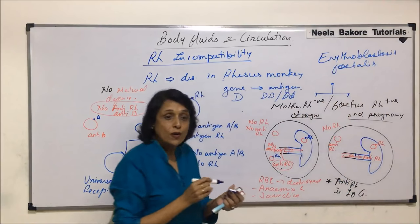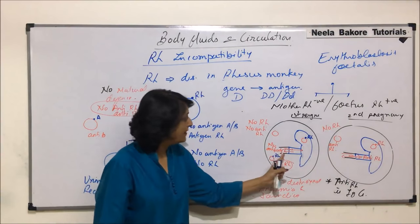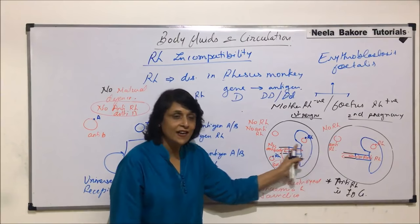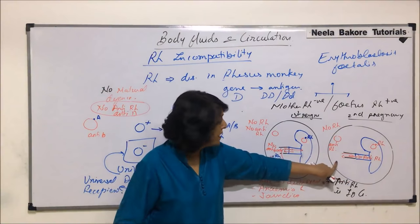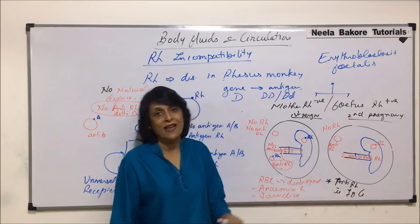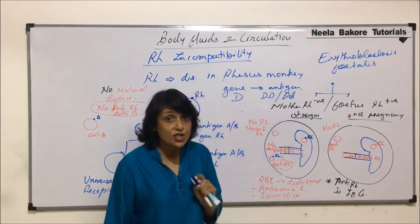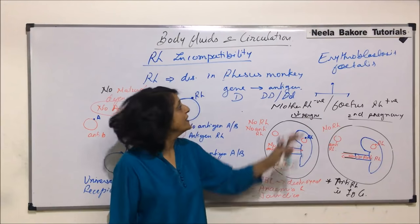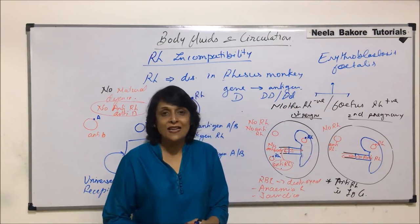The problem arises only when the mother is RH negative and the fetus growing in her body is RH positive. The problem begins during the first parturition when the umbilical cord was cut and blood mixing occurred — RH-containing RBCs entered the mother's body and she prepared anti-RH. In consecutive pregnancies, she has anti-RH ready in her body. Since anti-RH is IgG type, it crosses the placental barrier, goes into the fetus, reacts with the RH antigen on the fetal RBCs and destroys them, resulting in death of the fetus — a condition known as Erythroblastosis Fetalis.